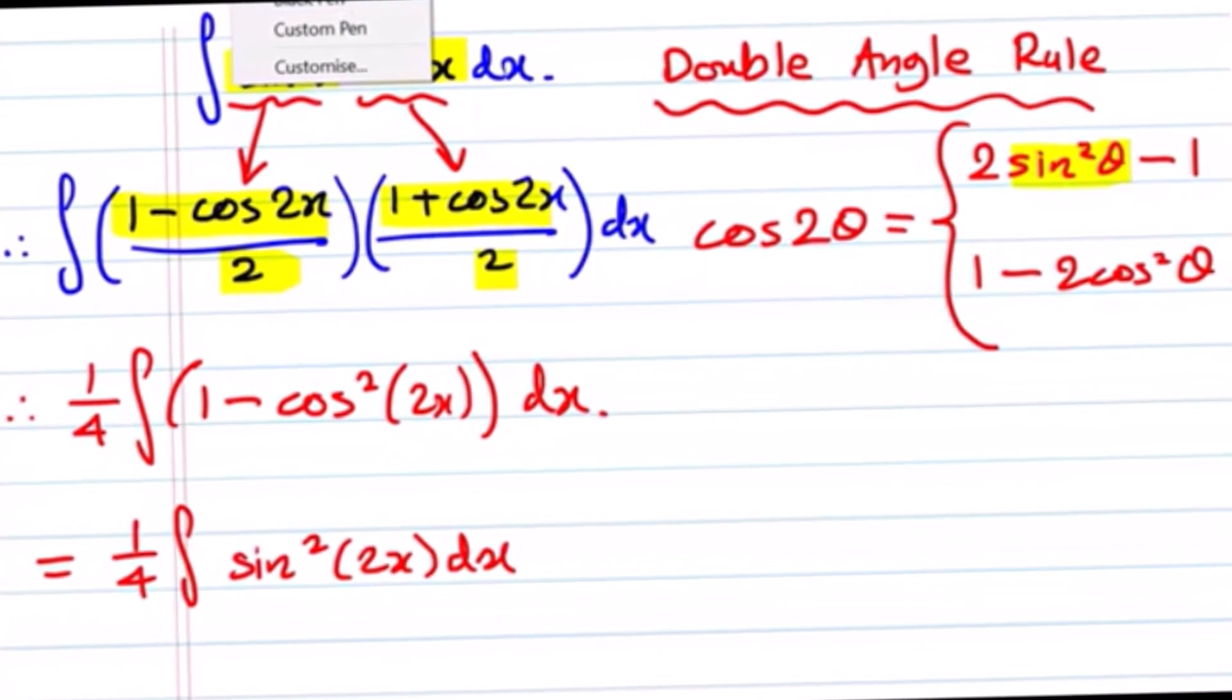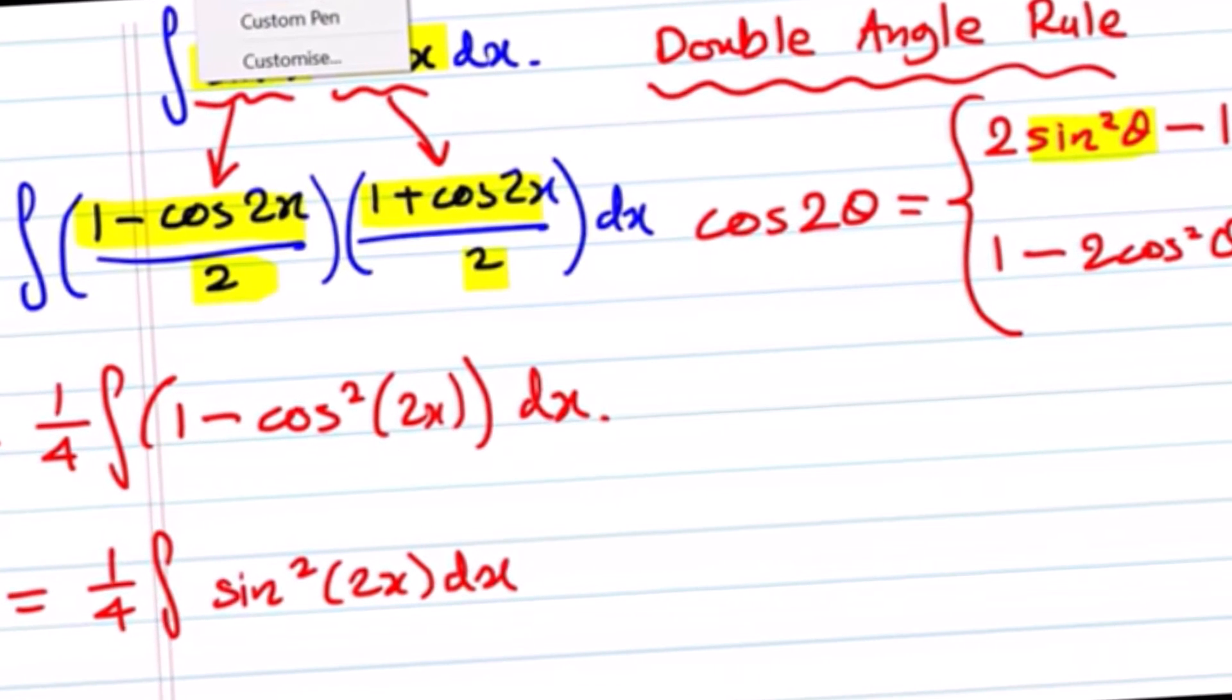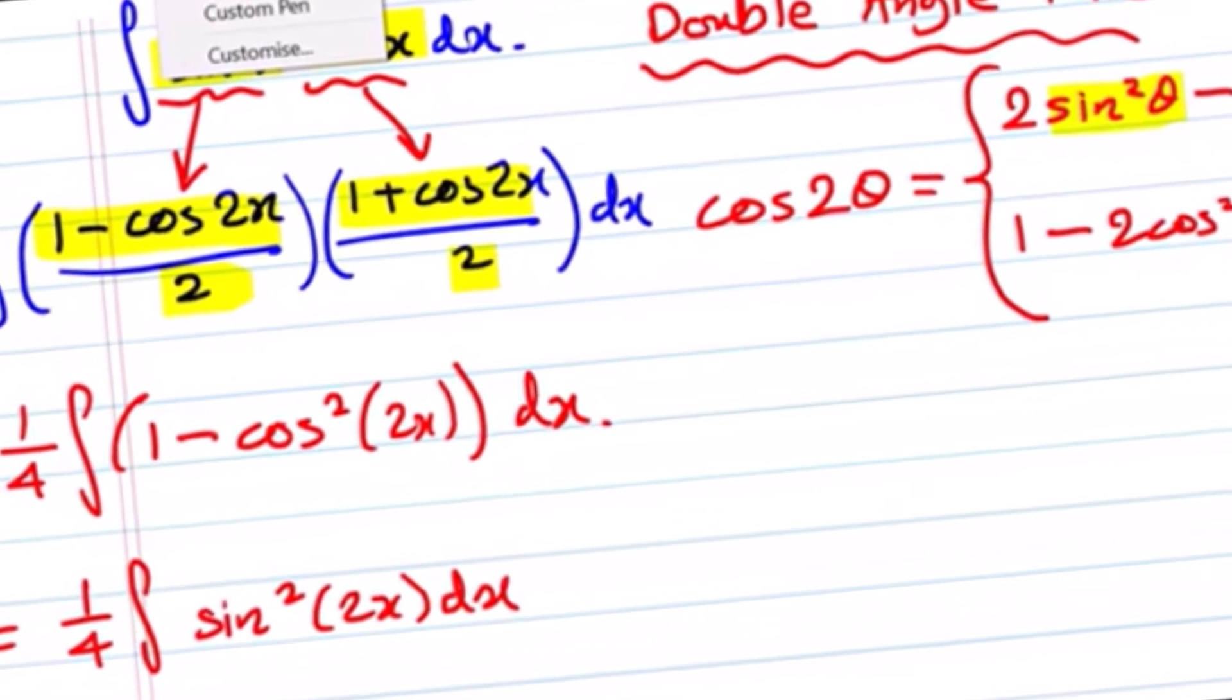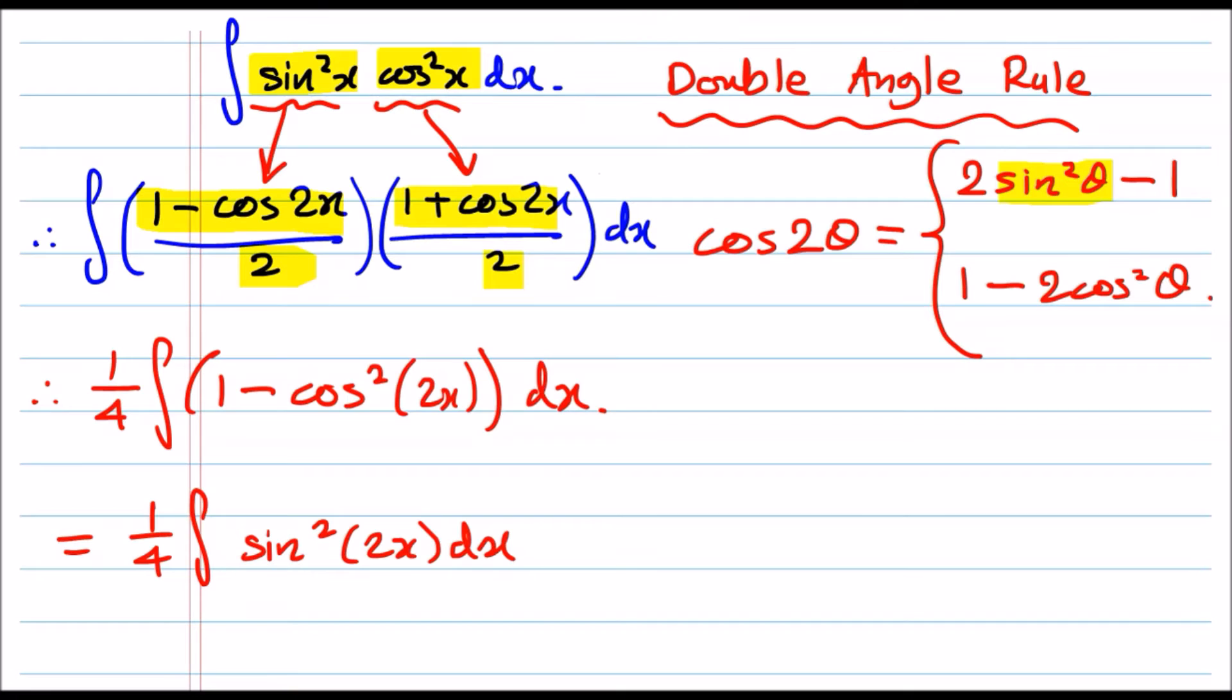Now, at this stage, we just need to integrate that sine squared term. And if we recall from earlier, we actually integrated sine squared x, and pretty much got 1 minus cos 2x over 2 in the beginning. So let's go ahead and look at the identity again. What we could say is that instead of theta, theta has been replaced by 2x, whereas previously it was just x.